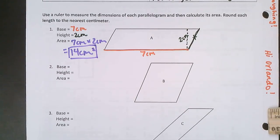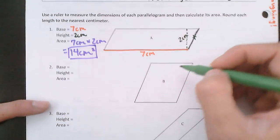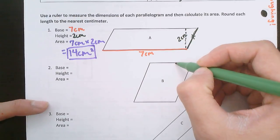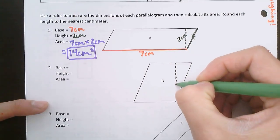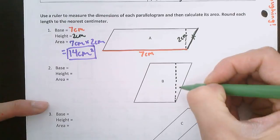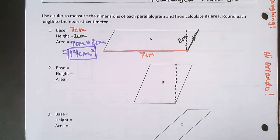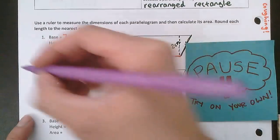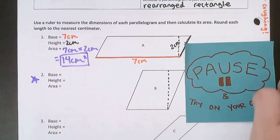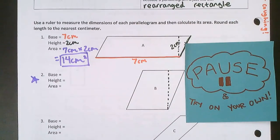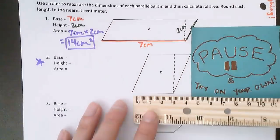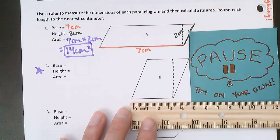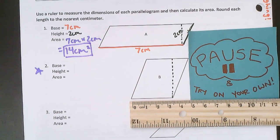For number two, let's draw our height line in. The height's going to be the distance from the top to the bottom. Now, using your ruler, I'm going to have you pause and try number two on your own. Measure it out and check your work. So pause and try on your own.